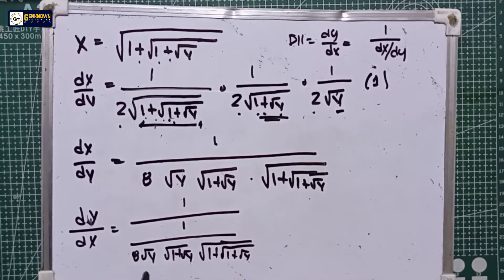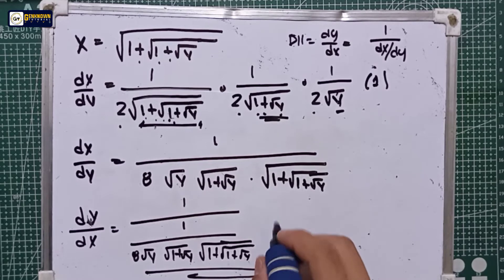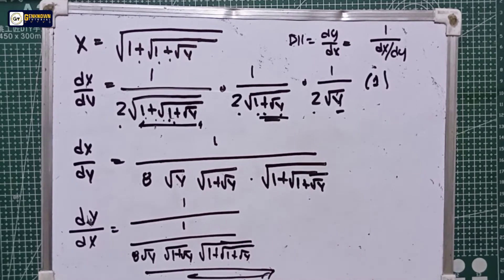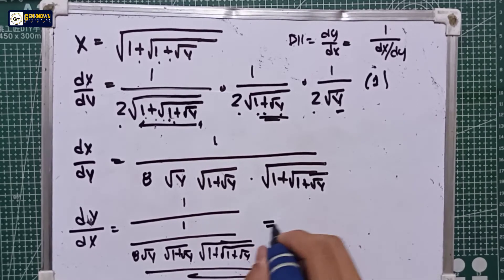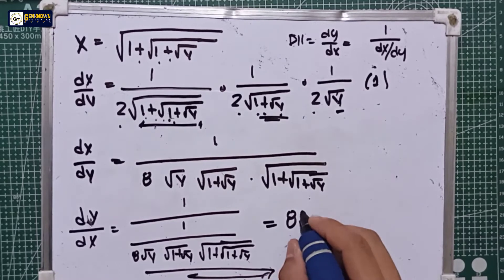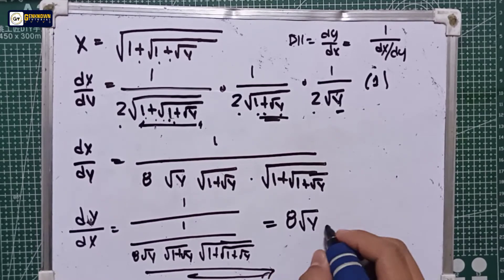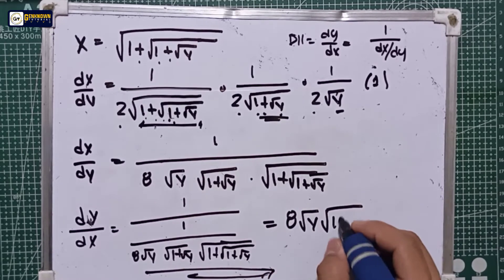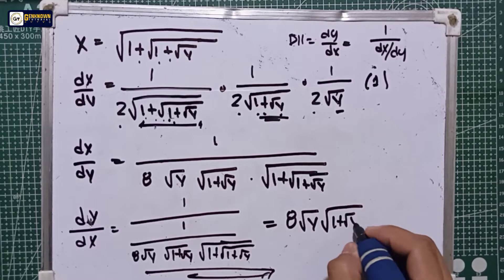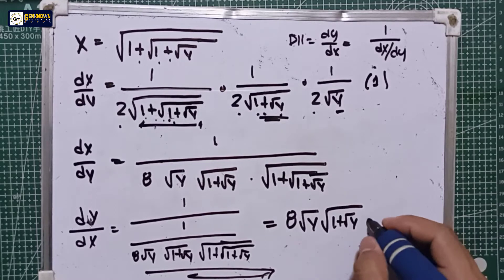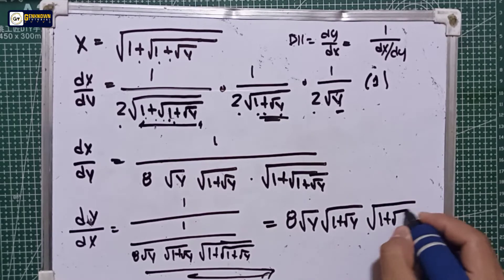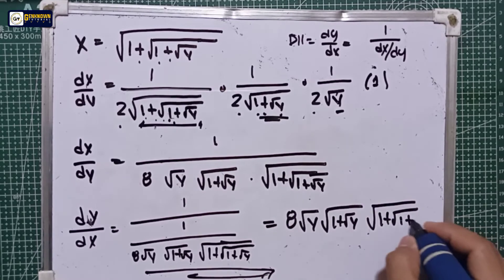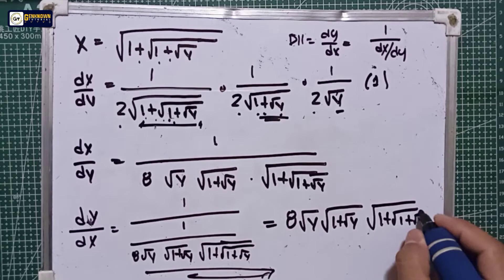The numerator becomes 1, so the final answer for dy/dx is equal to 8 times the square root of y, times the square root of 1 plus the square root of y, times the square root of 1 plus the square root of 1 plus the square root of y.